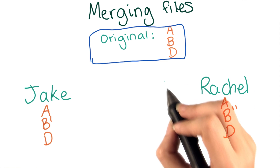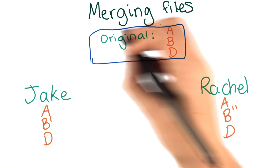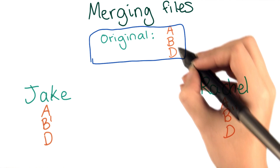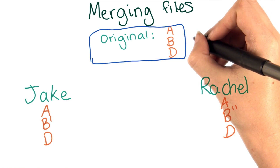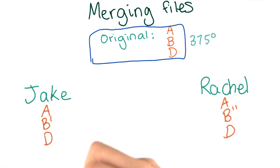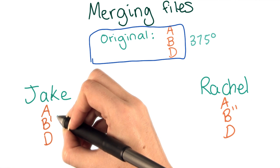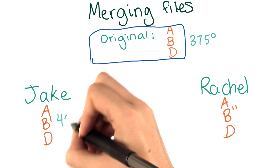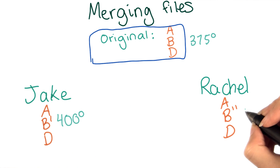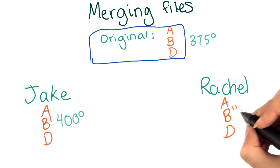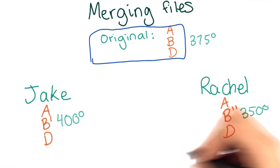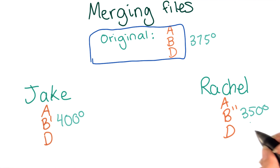If it helps to think about this in more concrete terms, you can imagine that this file is a recipe, and that B is a line that calls for preheating the oven to 375 degrees. Then B' could call for preheating the oven to 400 degrees, and B'' could call for 350. But again, this content really could be anything.